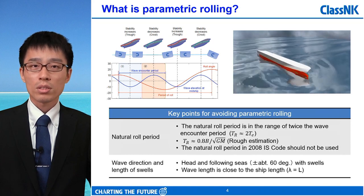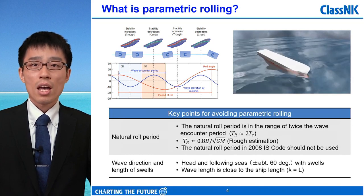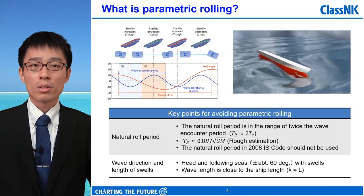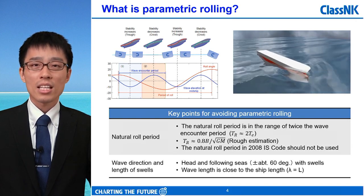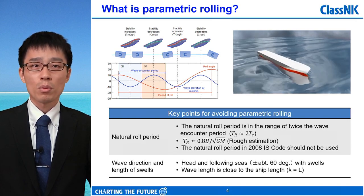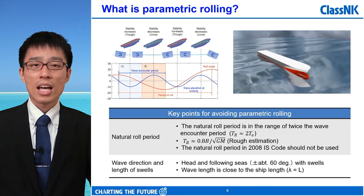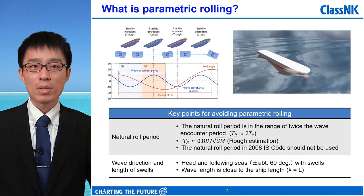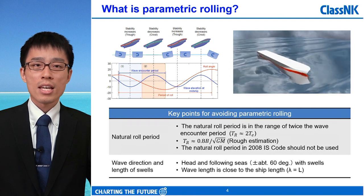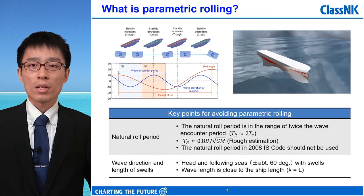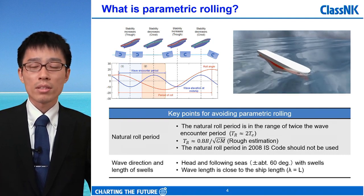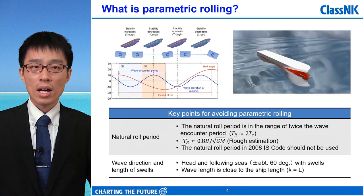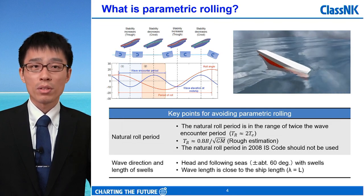In the worst case scenario, heavy rolling — like over 20 or 25 degrees — can suddenly appear in just a couple of periods, and it is difficult to take any action once it happens. In general, parametric rolling is more likely to occur when the natural roll period is in the range of twice the encounter wave period.